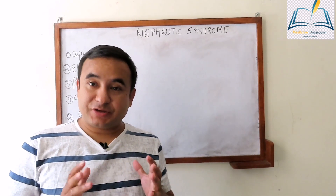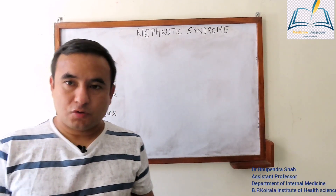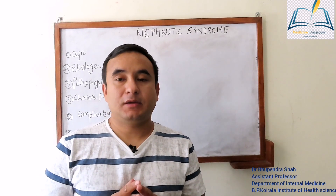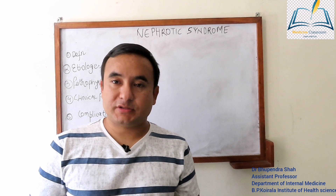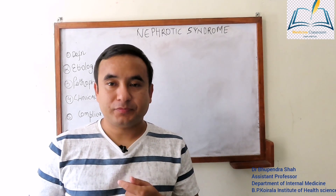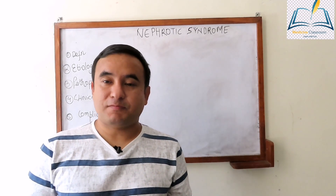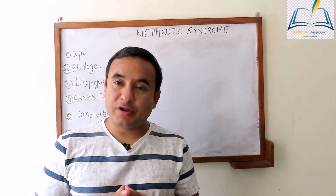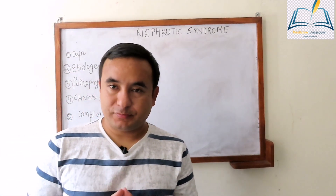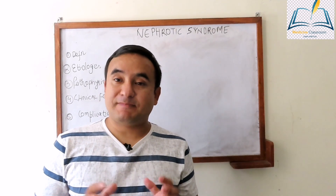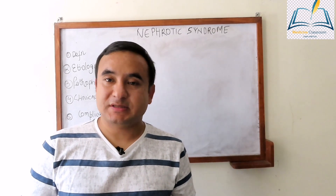In the last lecture on glomerular disease, we studied the six patterns of glomerular disease: number 1 is acute nephritic syndrome, number 2 is nephrotic syndrome, number 3 is pulmonary renal syndrome, number 4 is glomerular vascular syndrome, number 5 is antibacterial membrane disease, and number 6 is post-infectious glomerular disease.